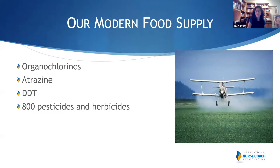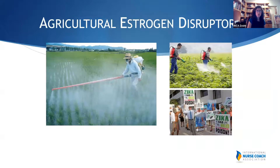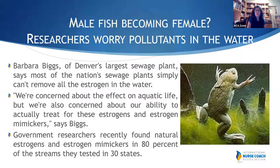In our modern food supply — as a review — endocrine disruptors come through our food. This is why we always emphasize organic, looking at the Environmental Working Group's Clean 15 and Dirty Dozen lists of most-sprayed fruits and vegetables. We're looking at DDT, atrazine, organochlorines, and 800 other potential pesticides and herbicides. Male fish are becoming female as a result of pollutants in our water supply — these are the same frogs that became feminized and developed female eggs from high levels of endocrine disruptors and pesticides.